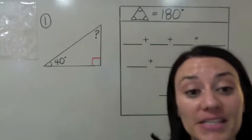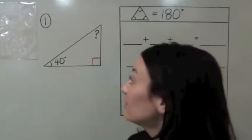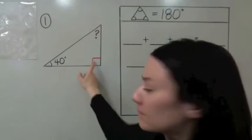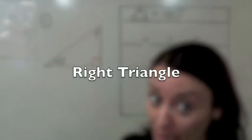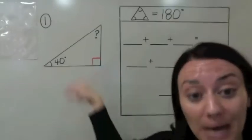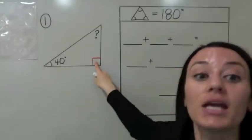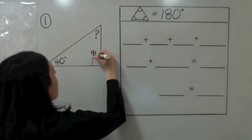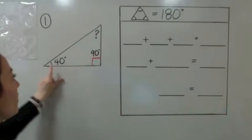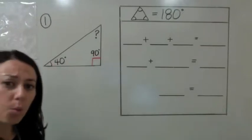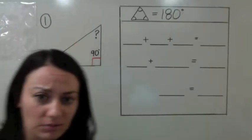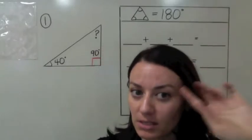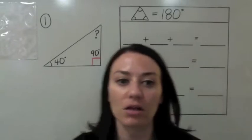Let's find the missing angle for triangle number one. What kind of triangle is this? It's a right triangle — that box indicates this is 90 degrees. So we know this is 90, and we know this is 40 degrees. What is the missing angle? We're going to set up an equation to solve for this.